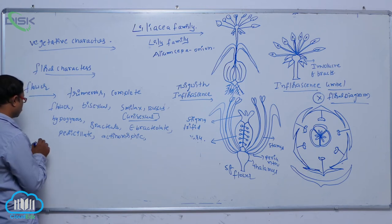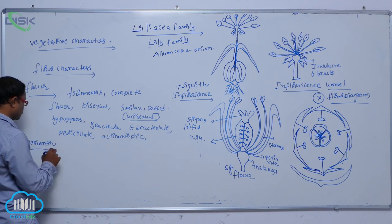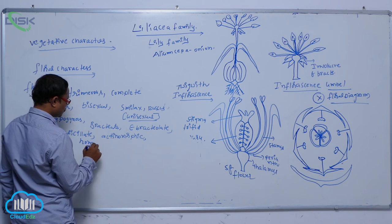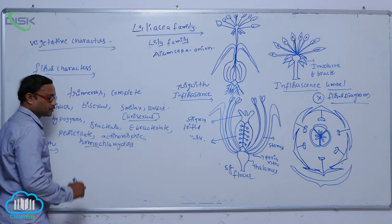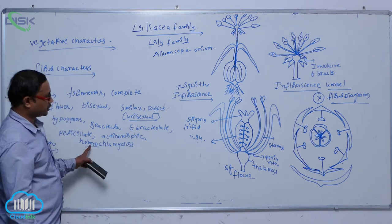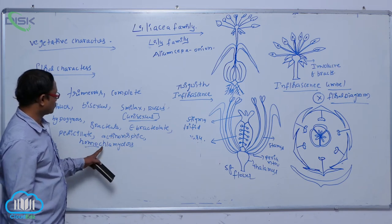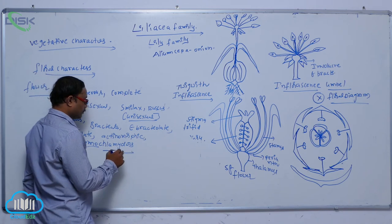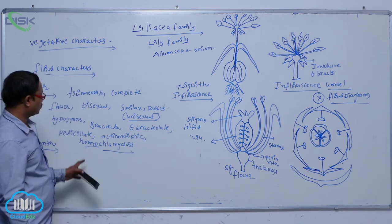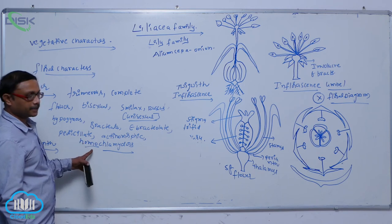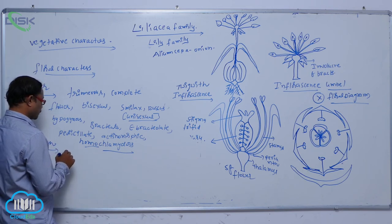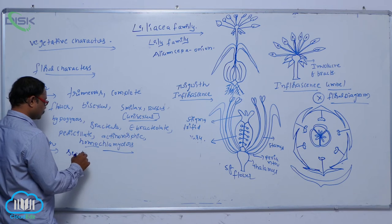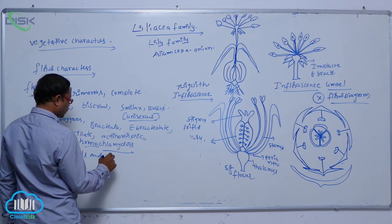In the flower, the perianth is known as homochlamydeous. Homo means similar — it does not differentiate the sepals and petals; both appear the same. That is why it is known as homochlamydeous. Chlamidae means perianth. The sepals and petals are not differentiated.